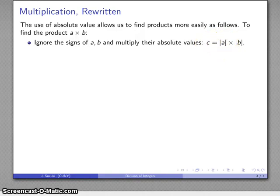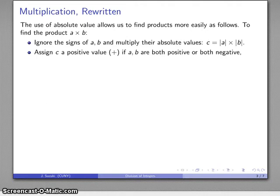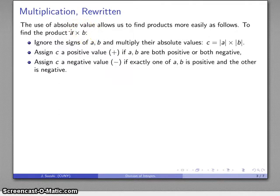Then I'm going to assign c a value that will depend on whether a and b are positive or negative. I will make c positive if both a and b have the same sign—if they're both positive or both negative. Likewise, if one of them is positive and the other one is negative, then I'll make c have a negative value.